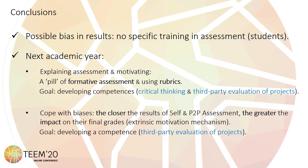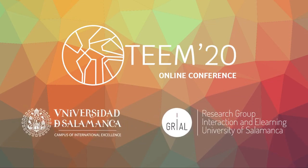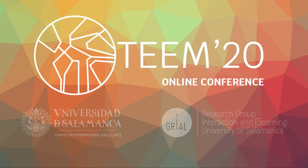Finally, some conclusions are shown in this final slide with the goal of introducing an effective student assessment next year in order to develop critical thinking and third-party evaluation of projects. Two elements are going to be implemented: the first is specific training in assessment, while the second is the introduction of an extrinsic motivation mechanism, in the sense that the closer the results of self and peer-to-peer assessment to the grades given by professors, the greater the impact on the student's final grade. Thank you.